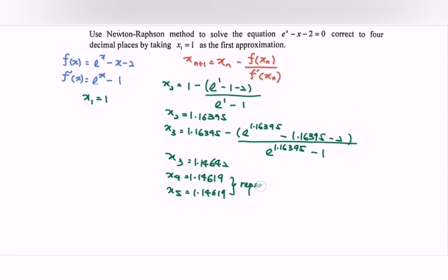Notice that we have repeated values, so x = 1.1462 correct to four decimal places.